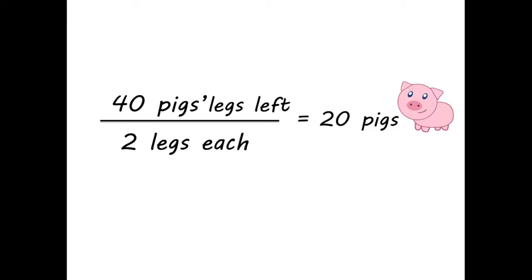So there are 40 pigs' legs left, and each pig has two legs on the ground. So dividing 40 by 2 means that there are 20 pigs.